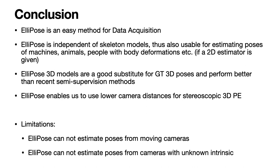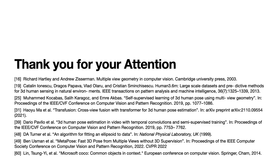It is independent of skeleton models, thus also usable for estimating poses of machines, animals, people with body deformations, etc. ElliPose 3D models are a good substitute for ground-truth 3D poses and perform often better than recent semi-supervision methods. ElliPose also enables us to use lower camera distances for stereoscopic 3D pose estimation. Nonetheless, ElliPose does not work with moving cameras or unknown intrinsics. Thank you.